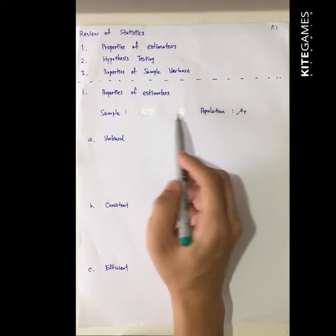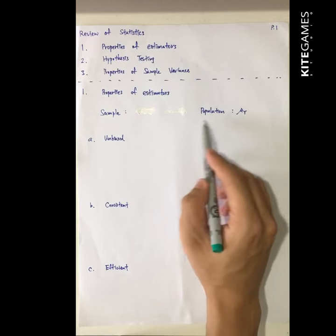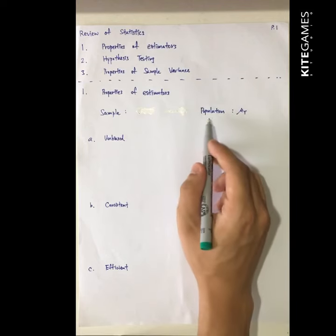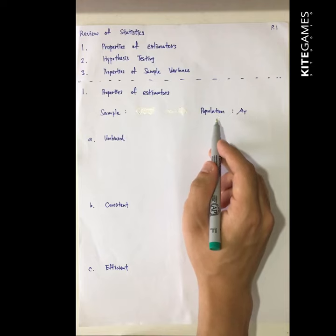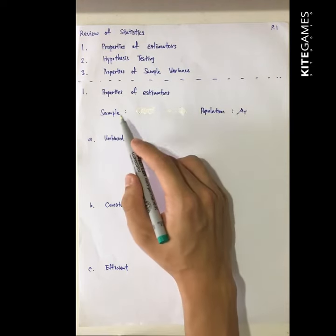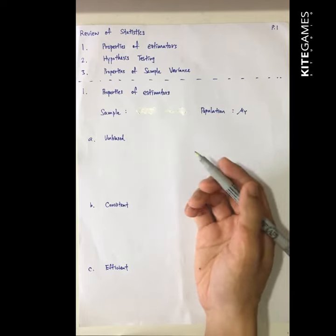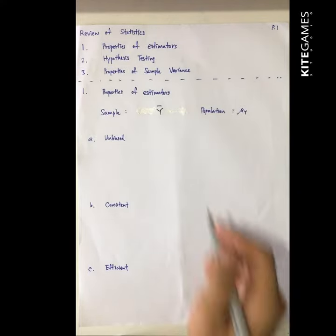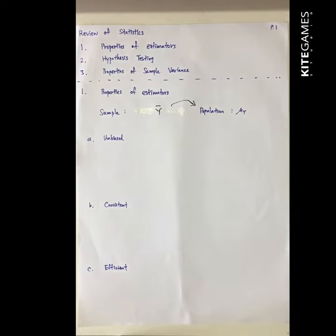Before I start — why do we need to do estimation? We want to estimate the properties of the population. Maybe in the population there are too many people, maybe 1 million. It is hardly possible for us to get all the data for these 1 million people. So we will do some random sampling — maybe we will randomly draw 10,000 people, then we can get their average.